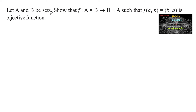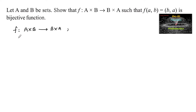Let A and B be sets. Show that f from A cross B to B cross A, such that f of (a, b) is equal to (b, a), is a bijective function. Given f from the Cartesian product A cross B to B cross A, defined by f of (a, b) is equal to (b, a).